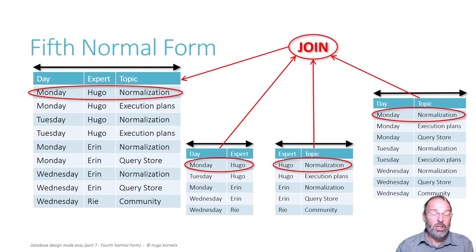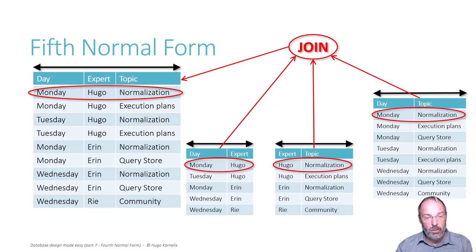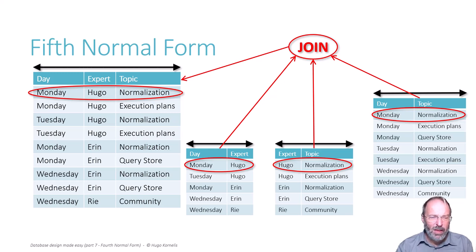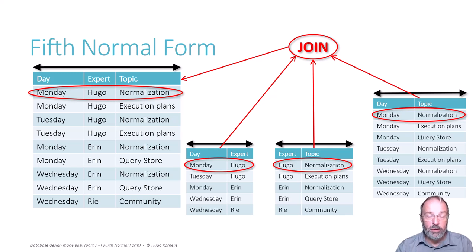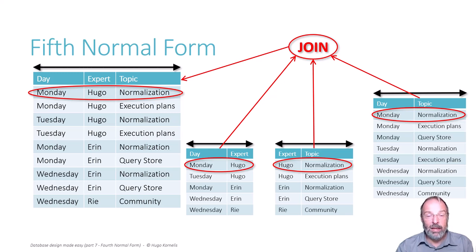In other words, splitting the left-hand side table into its three smaller parts and joining them back together is not guaranteed to return the same results — in fact, we added a row to the table that shouldn't be there. So there is no join dependency in this case, and the table on the left-hand side does not violate 5th normal form. We need it to represent the fact that Hugo is or is not picky about normalization on Monday. That means the three tables on the right-hand side are not needed, because each of them can be derived from the table on the left-hand side — and that is the only table that you should keep.